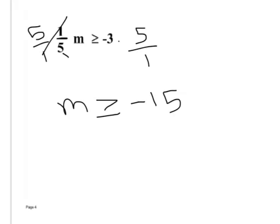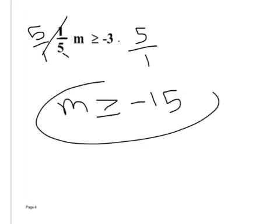So what I need to do — I can check this. A number bigger than negative 15. We could go zero. Zero times one-fifth is zero. Is zero greater than or equal to negative three? Yes, so this is true.